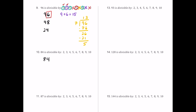For number 10, we have 84. It's even, so 2 works. Half of 84 is 42 — still even — so 4 works. Half of 42 is 21, which is odd, so 8 fails. The sum 8 plus 4 is 12, a multiple of 3 but not 9. The last digit is 4, not 5 or 0, so 5 and 10 fail. Since 2 and 3 both work, 6 works. For 7, doing the long division: 7 times 12 is 84 exactly, remainder 0, so 7 passes.